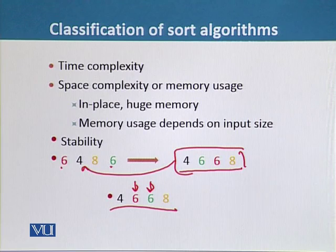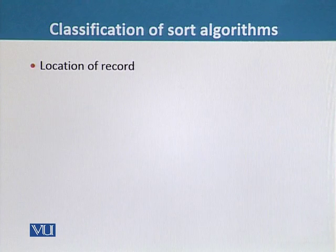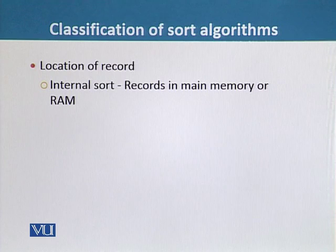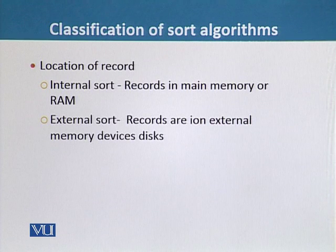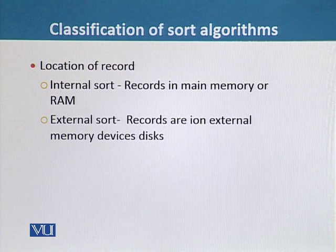The next parameter is location of the record. If we have a dataset that is using the main memory or RAM, then it is an internal sort algorithm. On the other hand, if the process and datasets are using external memory, for example external hard devices or memories, then we call them external sort algorithms.